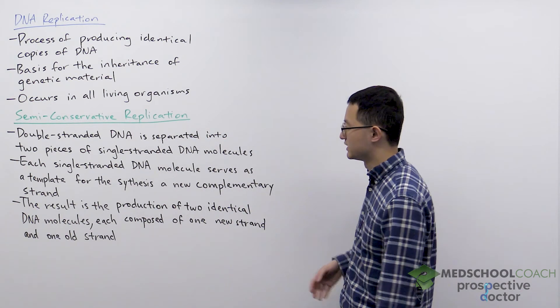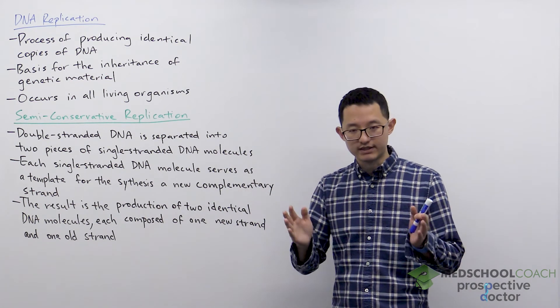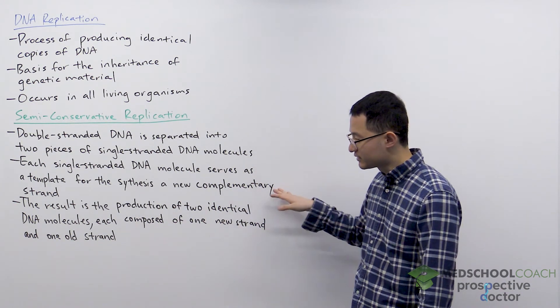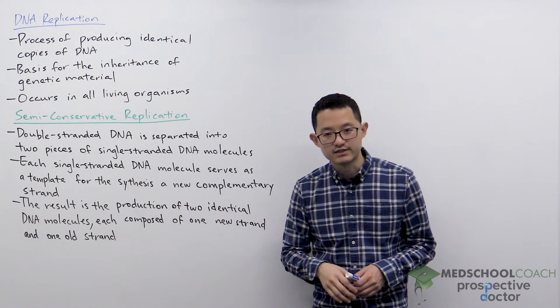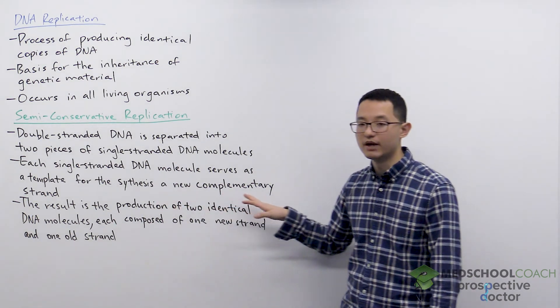So essentially what happens with DNA is that the double-stranded DNA is first separated into two pieces of single-stranded DNA molecules. Each of these single-stranded DNA molecules then serves as a template for the synthesis of a new complementary strand.